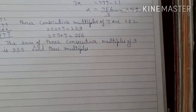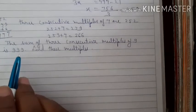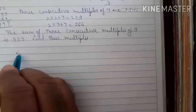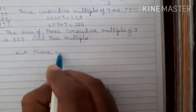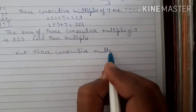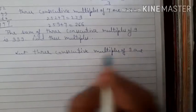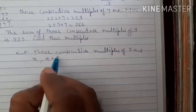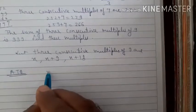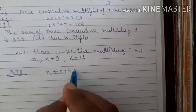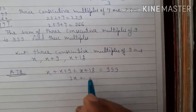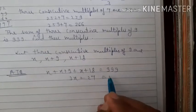Similarly, the sum of 3 consecutive multiples of 9 is 999. Find these multiples. This is the same type of question. Let 3 consecutive multiples of 9 be x, x plus 9, and x plus 18.